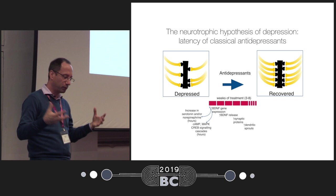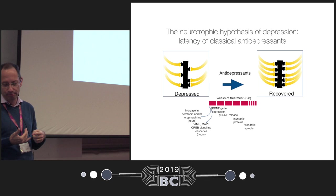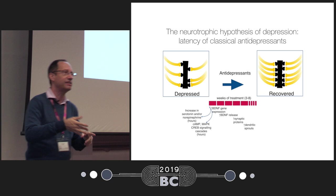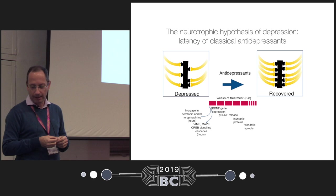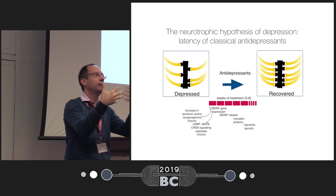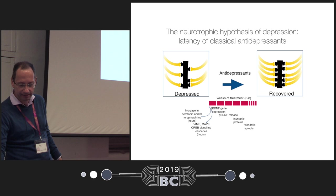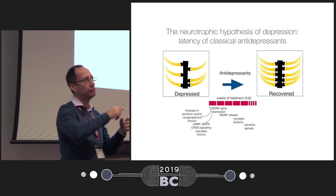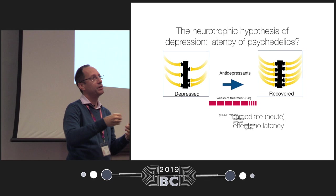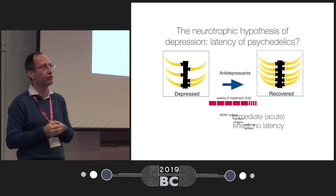This is what we are proposing using our models: classical antidepressants have a latency because they depend on increasing serotonin levels, then activating signaling pathways such as cyclic AMP, MAP kinase, CREB, etc., then increasing BDNF levels, and finally modulating synapses. What we believe happens with psychedelics is that you have a shift in this effect — you change plasticity in connections among cells faster because you are engaging BDNF more rapidly. This is what we are trying to explore using these models.